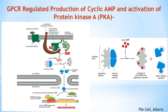Protein kinase A does not mediate all the functions of cyclic AMP in animal cells. In olfactory neurons, cyclic AMP directly activates ion channels in the cell membrane. In other cells, cyclic AMP activates a guanine nucleotide exchange factor (GEF), which activates a monomeric GTPase called Rap1. This often leads to increased cell adhesion through the activation of cell surface integrins.